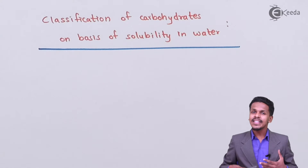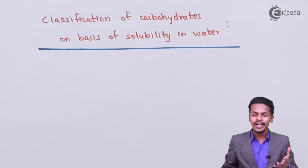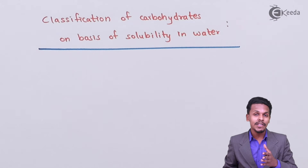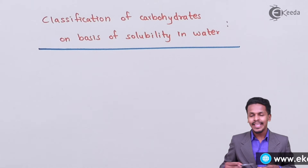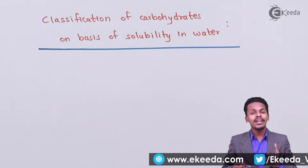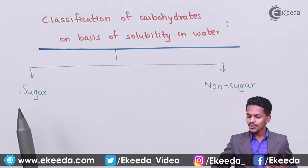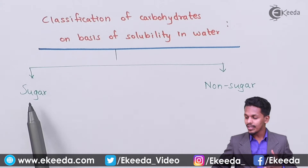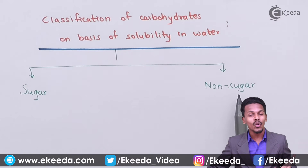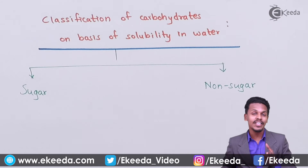In this topic I am going to talk about the classification of carbohydrates on the basis of solubility in water. In that case, the carbohydrates are of two types — that is sugar and non-sugar. So what is sugar and what are non-sugars? This is what I am going to talk about in this topic.